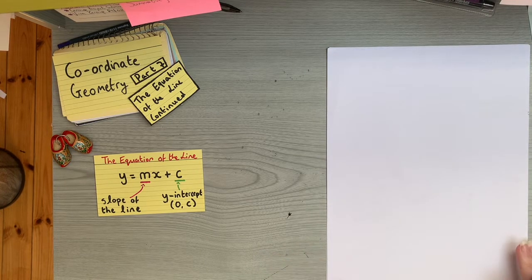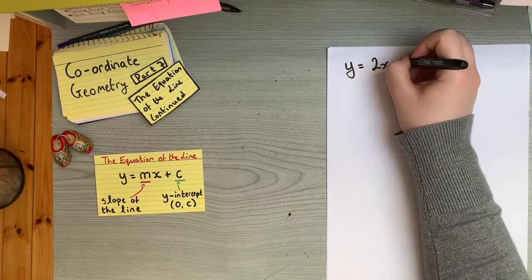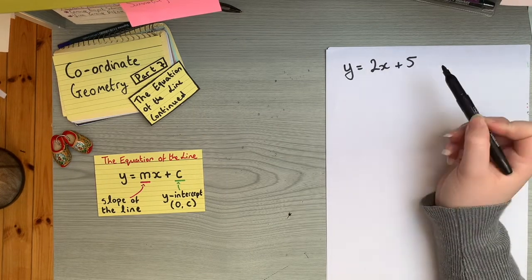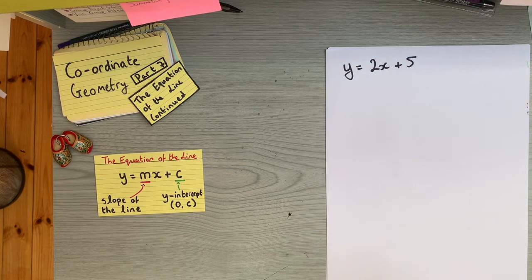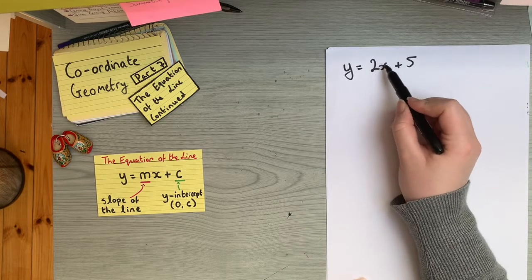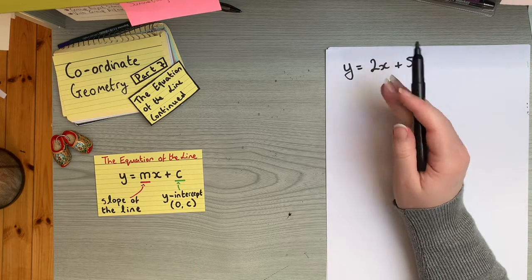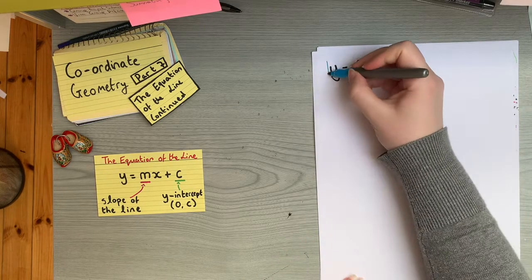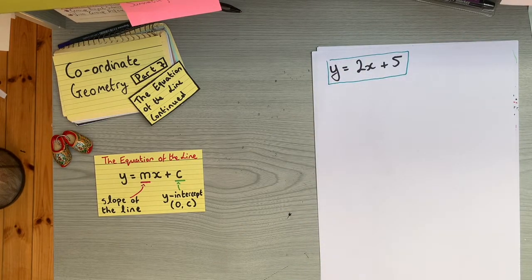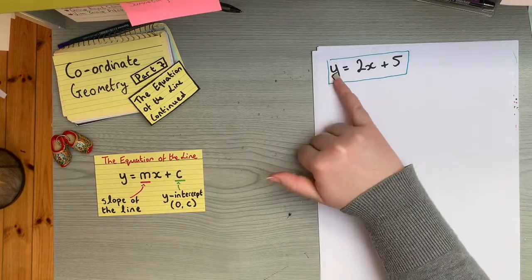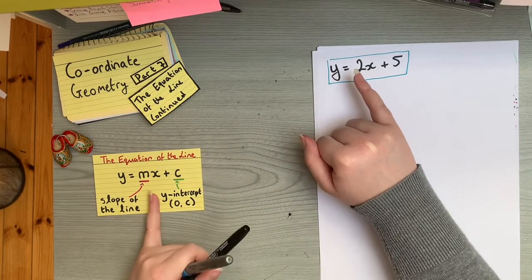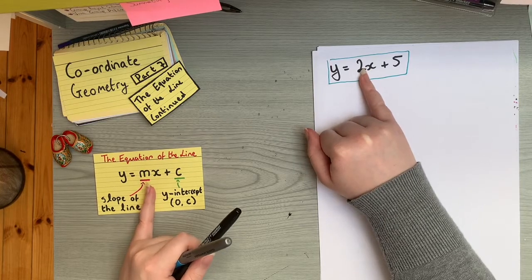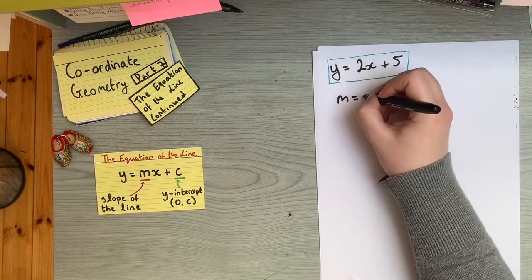From the last video we had the line y = 2x + 5. For each x-coordinate, you double it and add 5 to get the y-coordinate, so every point on that line satisfies this equation. Comparing this to the form y = mx + c, the x corresponds to x, so the coefficient of x equals m — meaning the slope of this line is m = 2.